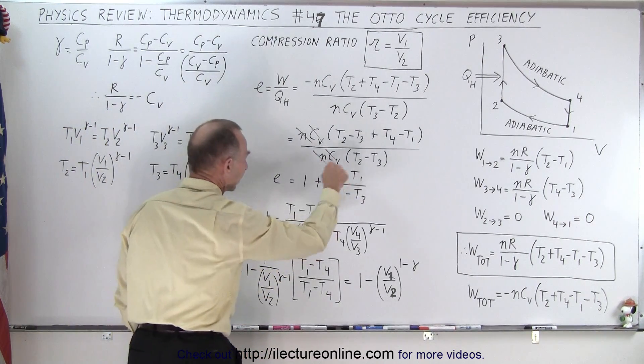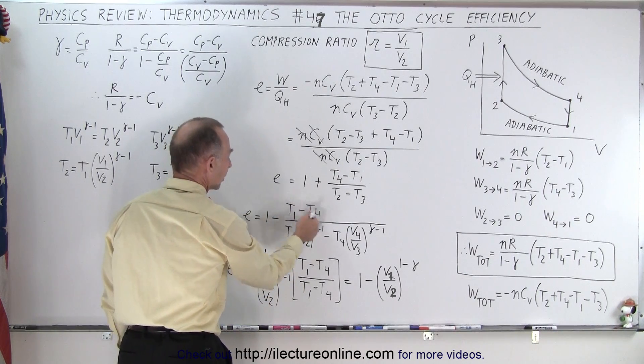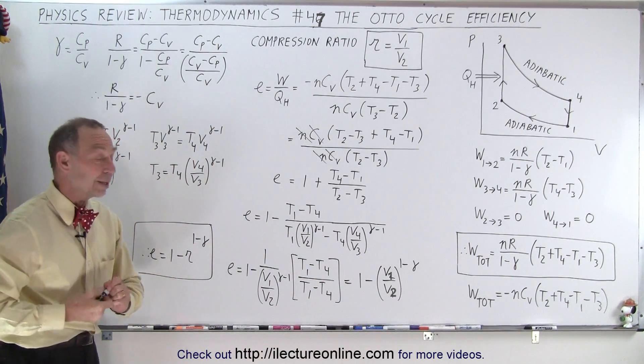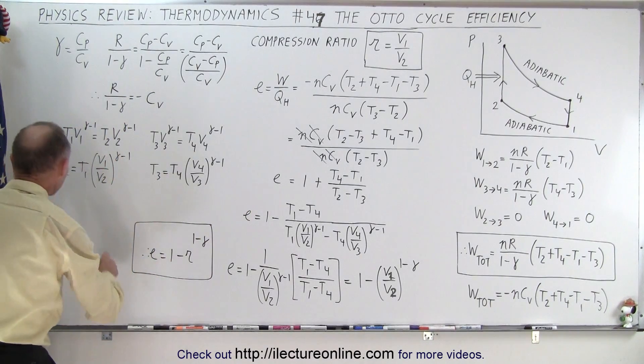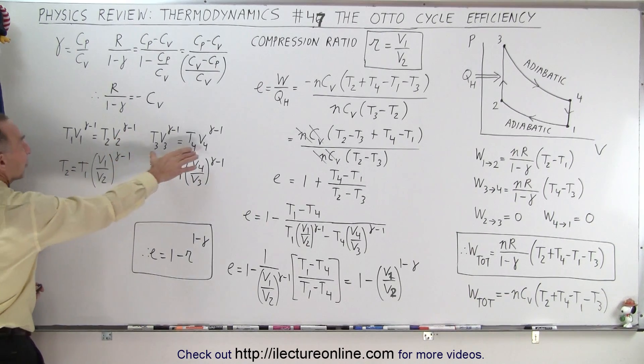Now how do we simplify that? In the numerator, we're going to make this a negative and switch order to T1 minus T4. In the denominator, we're going to come back over here since we have an adiabatic process from 1 to 2 and 3 to 4. We can say that T1V1 to the gamma minus 1 must equal T2V2 to gamma minus 1, and the same for the other process.